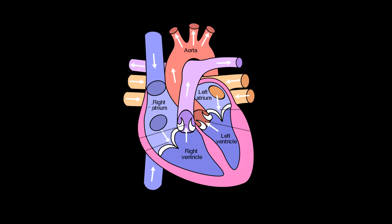We want blood from the right atrium to go to the right ventricle, and these valves are going to help close that off so it doesn't leak back into the right atrium. If it does, we have some kind of problem. And the same thing here — the valves help prevent the blood from going back from the pulmonary artery back into the right ventricle.